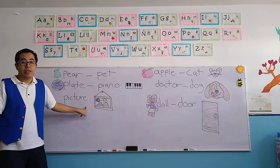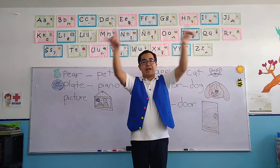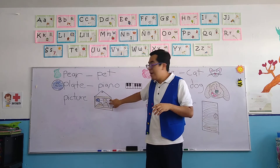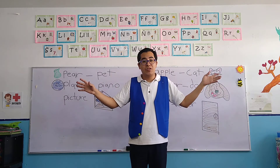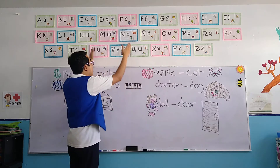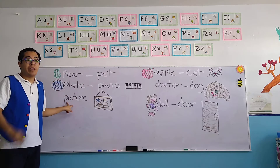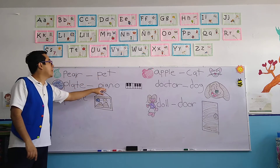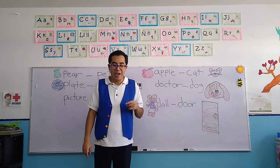Let's continue with the next object — it's called a picture. A picture is an object like a rectangle that contains images. In this case, the image that appears here is a desert, un desierto. But there are also all types of images. Those images appear in this rectangle called a picture, and you can have them on the walls. Picture starts with the letter P. All of these words — pear, pet, plate, piano, and picture — all of them begin with the letter P of Pablo.